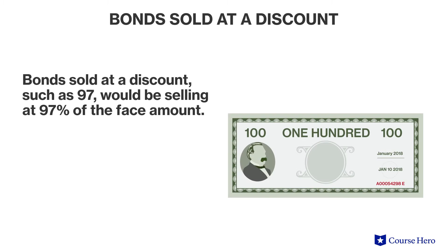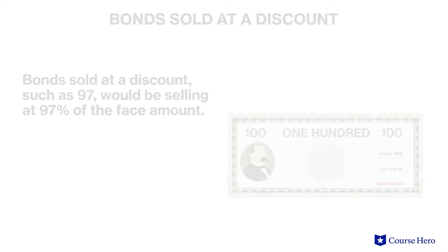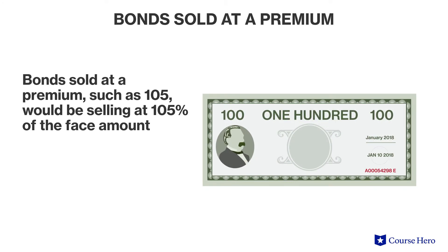Bonds sold at a discount, or less than 100, such as 97 for example, would be selling at 97% of the face amount. Bonds sold at a premium, or more than 100, such as 105 for example, would be selling at 105% of the face amount.